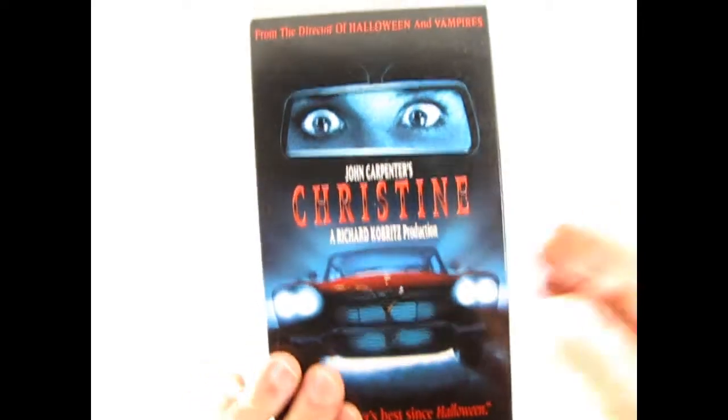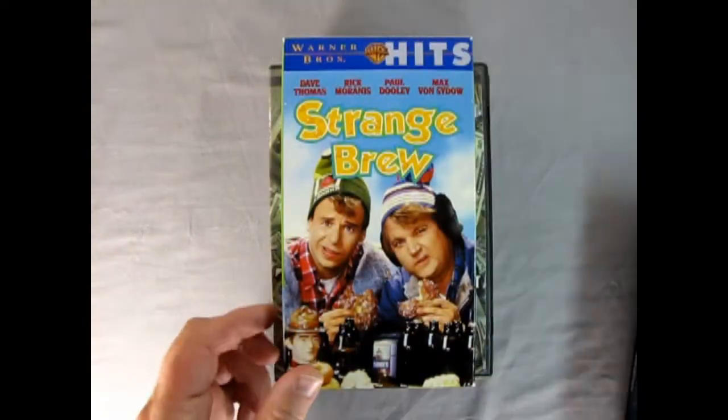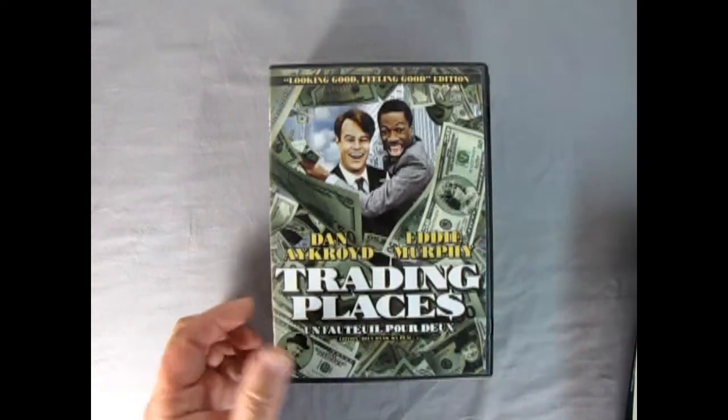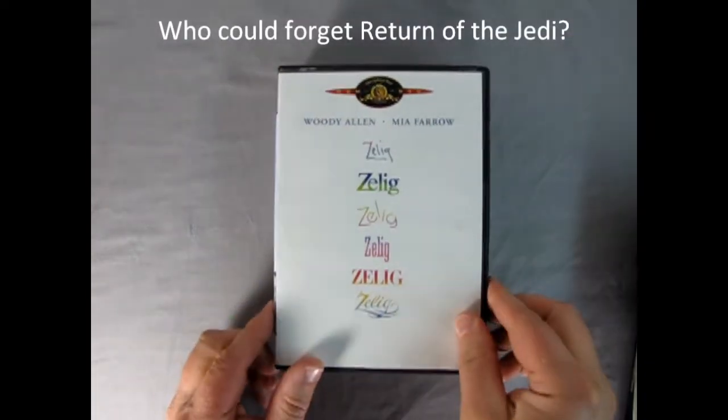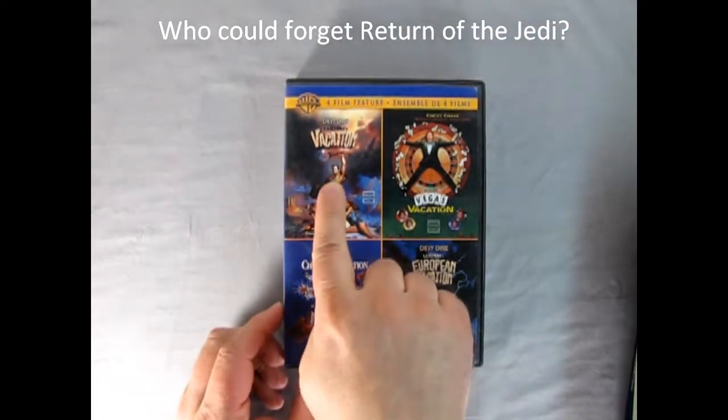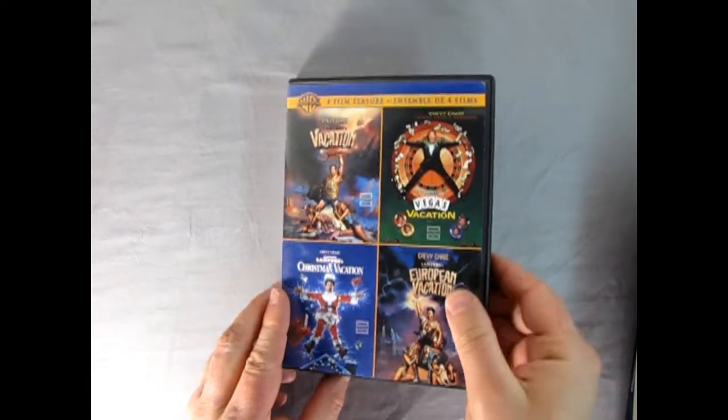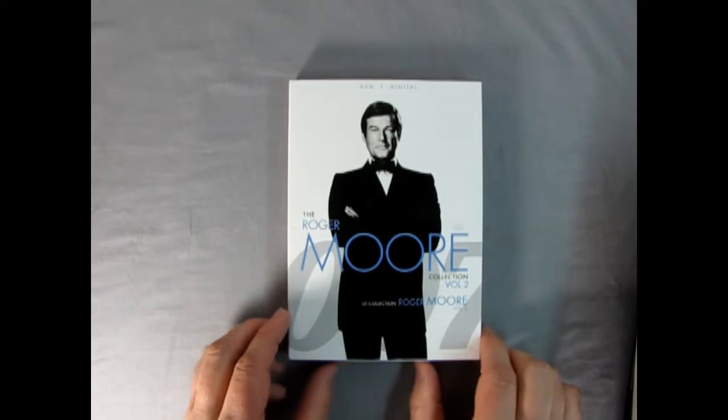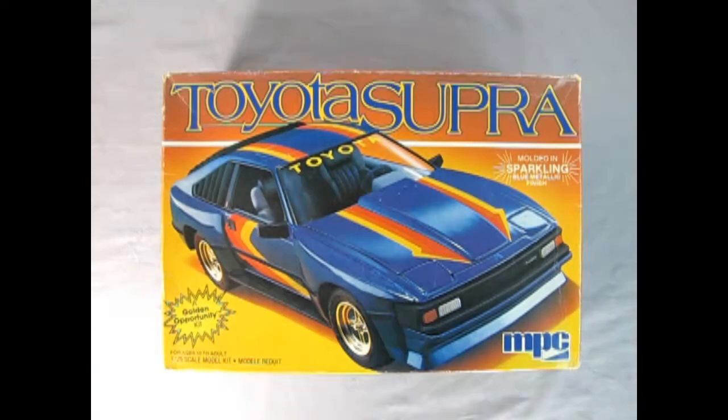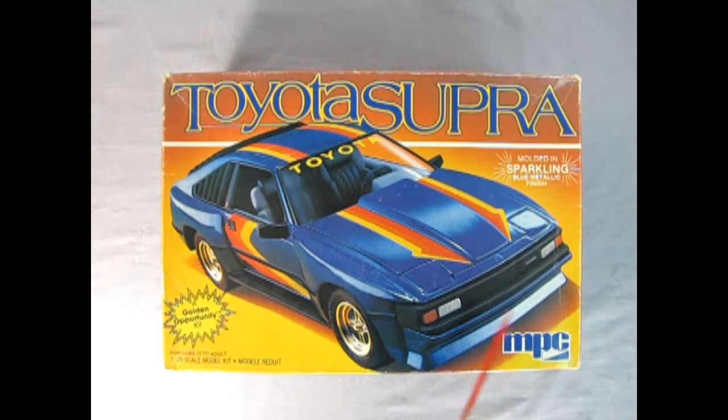1983 saw some really amazing movies. We got such greats as Christine, Cheech and Chong Still Smokin', Strange Brew, Trading Places, A-League, the beginning of the Vacation series with National Lampoon's Summer Vacation, and even Roger Moore in Octopussy. We also got this really amazing Toyota Supra model kit by MPC. This one was molded in sparkling blue metallic finish and was a golden opportunity kit in 125th scale for ages 10 to adult.